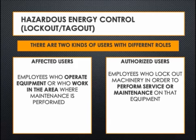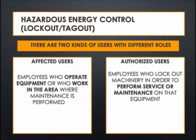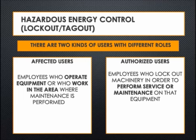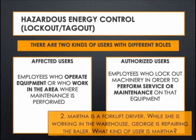When it comes to controlling hazardous energy, OSHA defines two kinds of users. The first and most common are affected users. These are employees who operate equipment or work in the area where maintenance is performed. For example, if a maintenance worker came in to work on a lighting fixture in an area where you work, you would be an affected user. An authorized user is someone who performs service or maintenance on a machine. In our agency, this could be our maintenance technician or someone from an outside company.